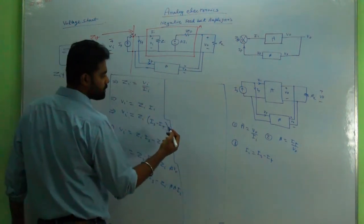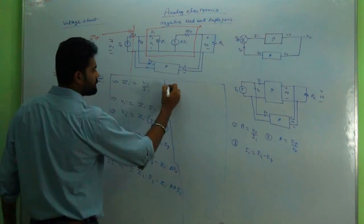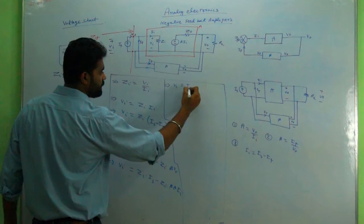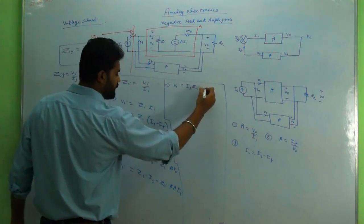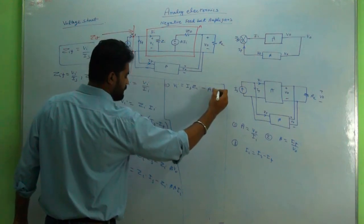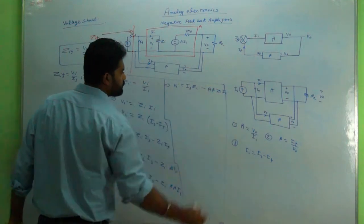Thus we can derive it further as VI equal to IS into ZI minus A into beta into ZI into II.